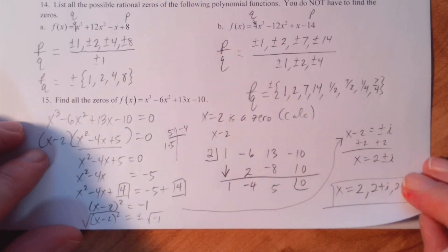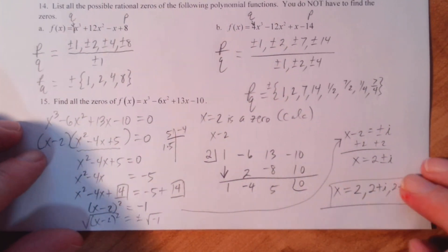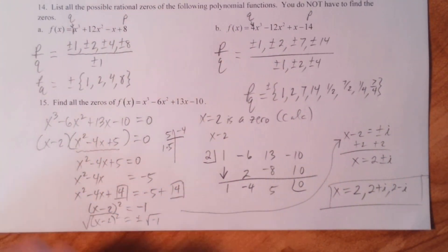So we're supposed to find all zeros. We found 2 from the calculator, and 2 plus i and 2 minus i from completing the square. Notice this was a degree 3 polynomial, and we got 3 zeros — that's what we expect. I'm going to go ahead and stop right there, and I'll do one last video to wrap this up.